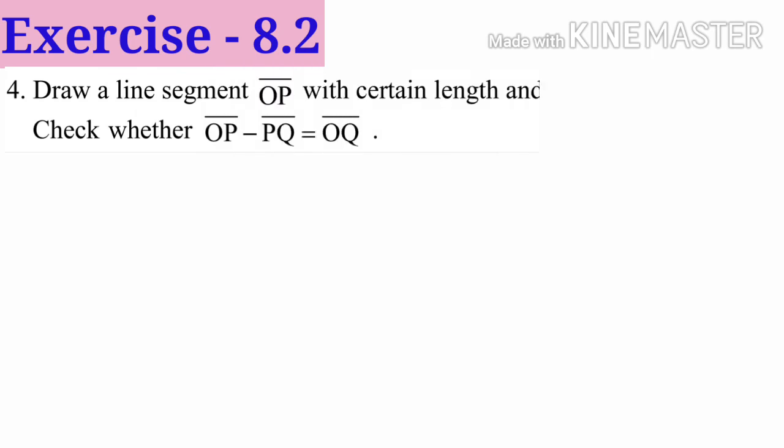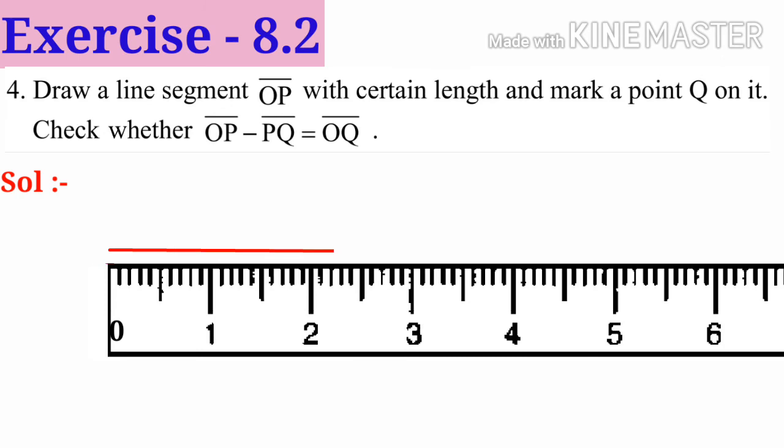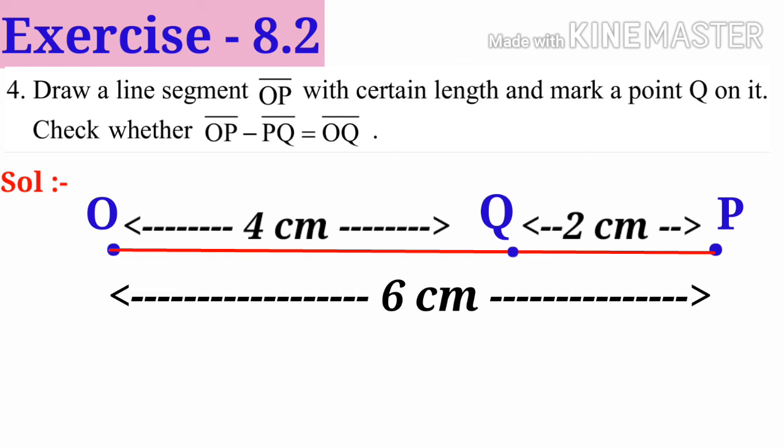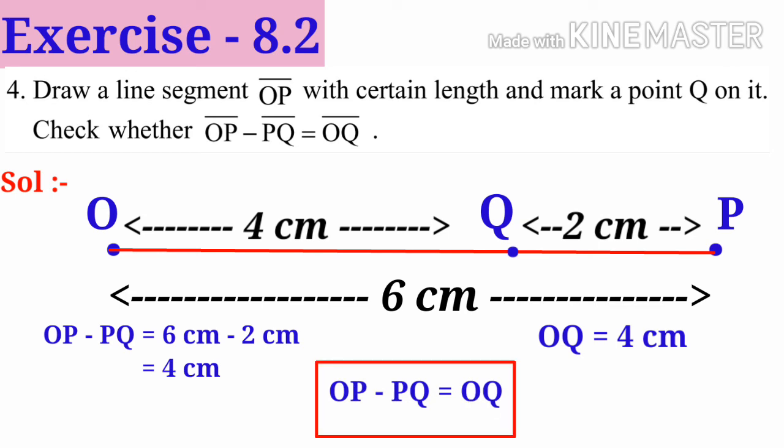Now number 4. Draw a line segment OP with certain length and mark a point Q on it. Check whether OP minus PQ equals OQ. Solution: Take the scale, draw a line from 0 to 6 centimeters and name the end points as O and P. Identify a point at 4 centimeters and name it as Q. So OP is 6 centimeters, OQ is 4 centimeters, and QP is 2 centimeters. Here OQ is 4 centimeters, and OP minus PQ equals 6 centimeters minus 2 centimeters, which equals 4 centimeters. So both left and right are equal. Therefore, OP minus PQ equals OQ.